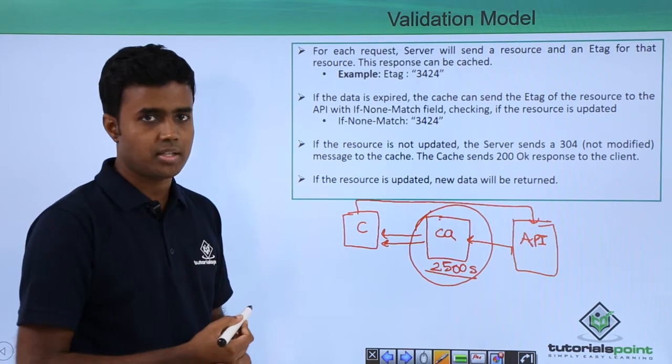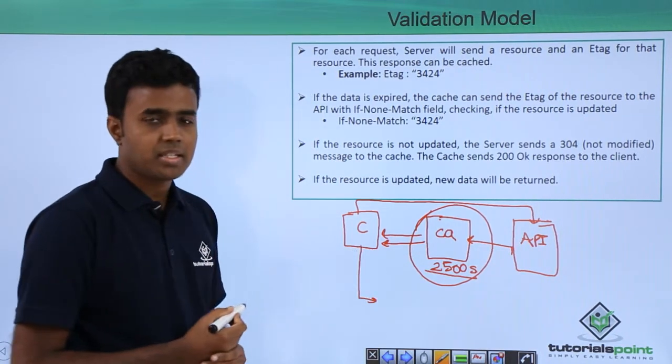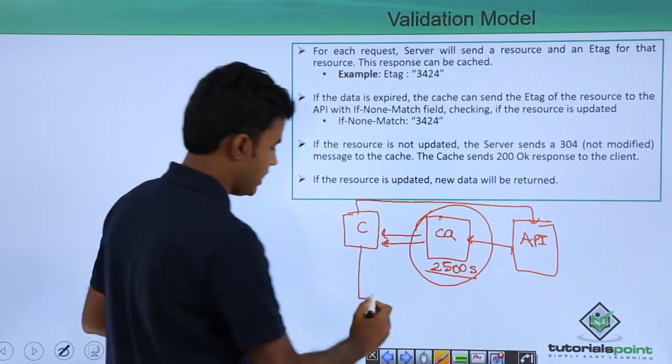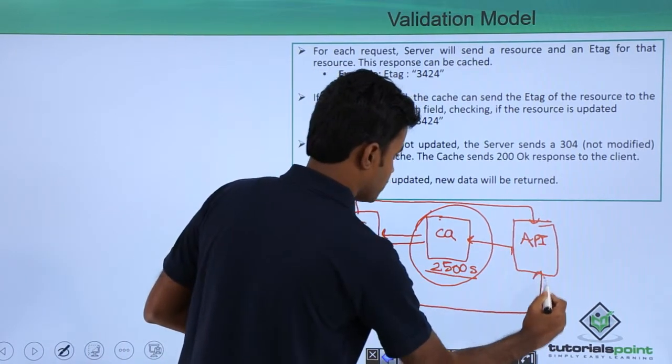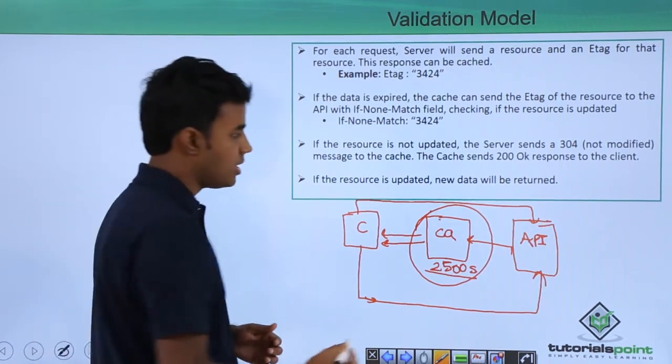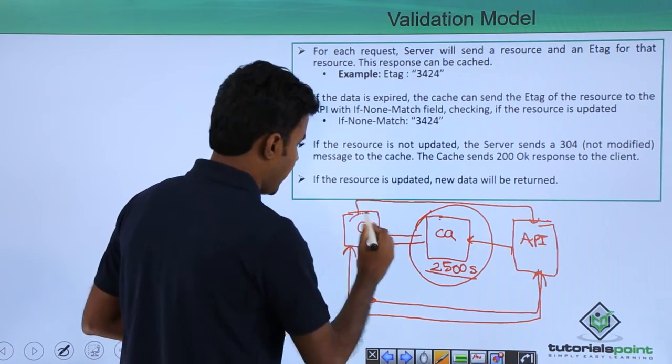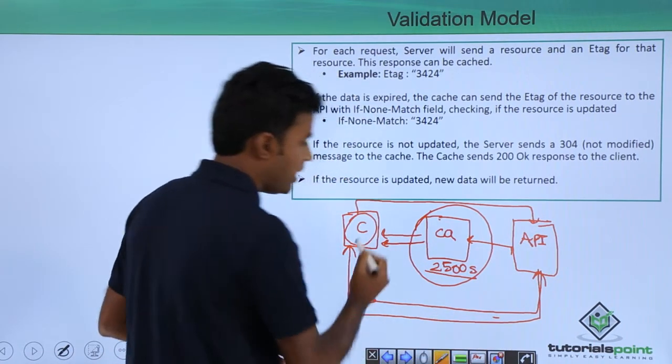After 2500 seconds, what happens is that the client prepares a fresh request and sends all the way to your server or API, and the server again prepares the response and it sends all the way to the client. So the client needs to download the entire data again.